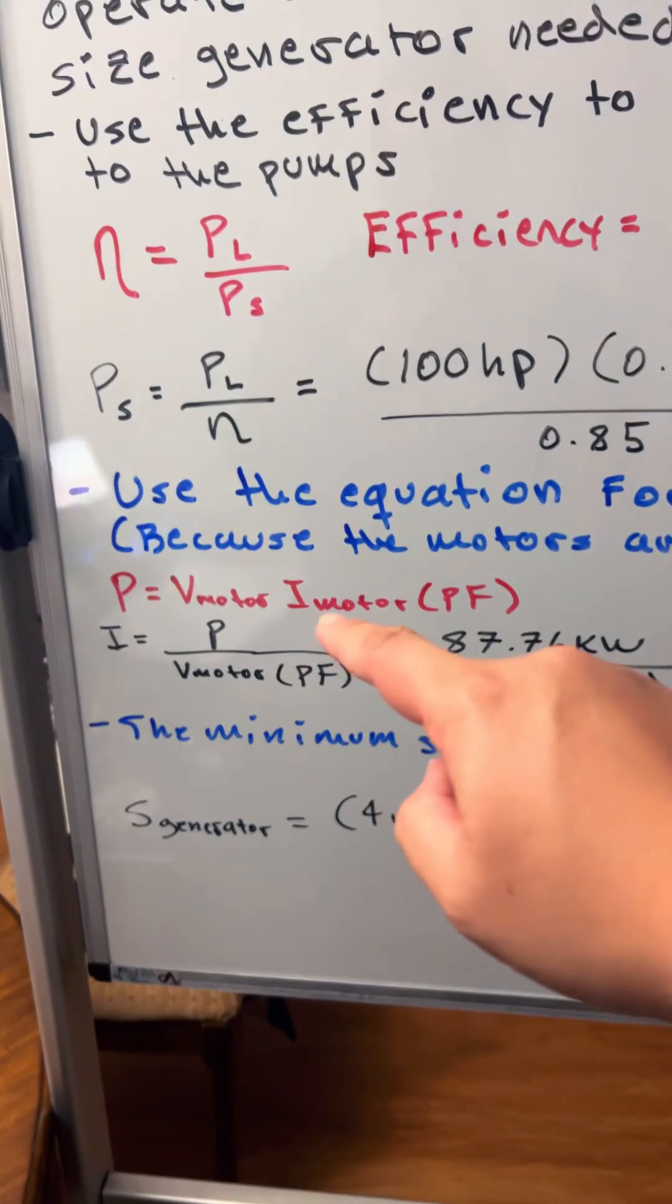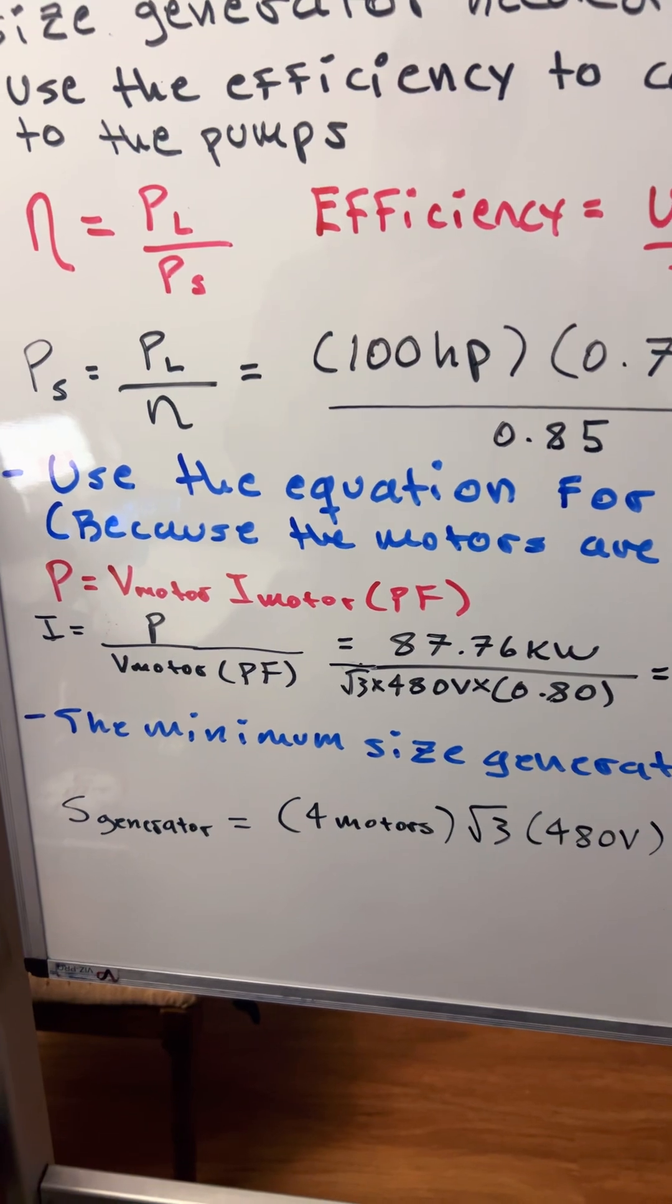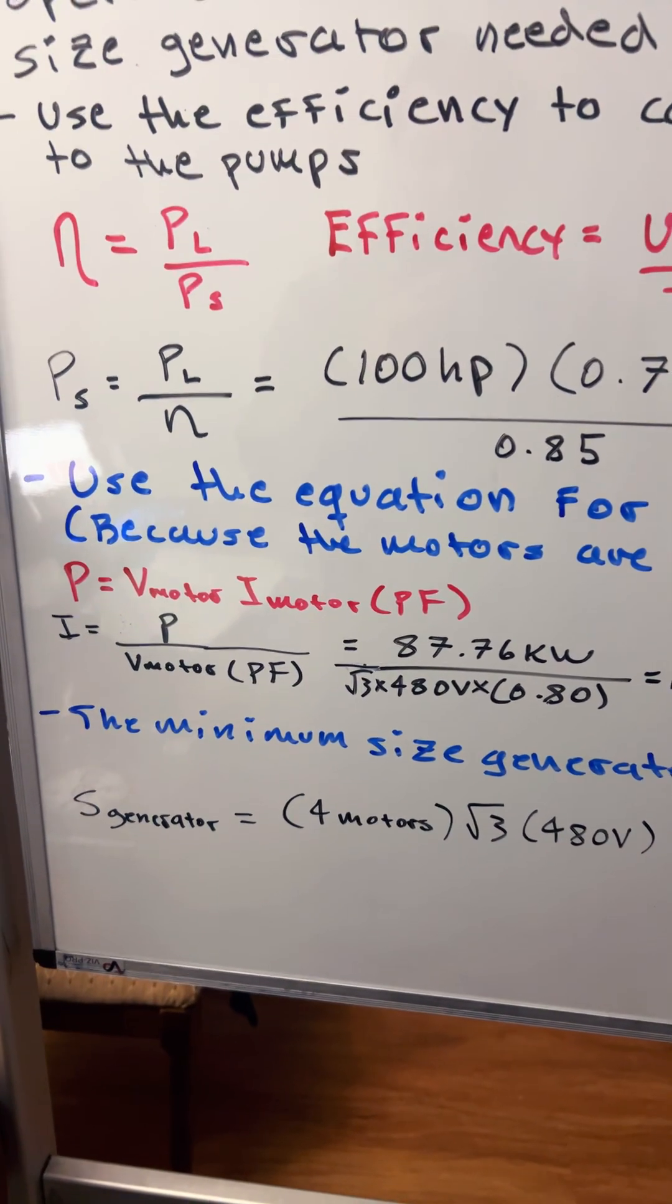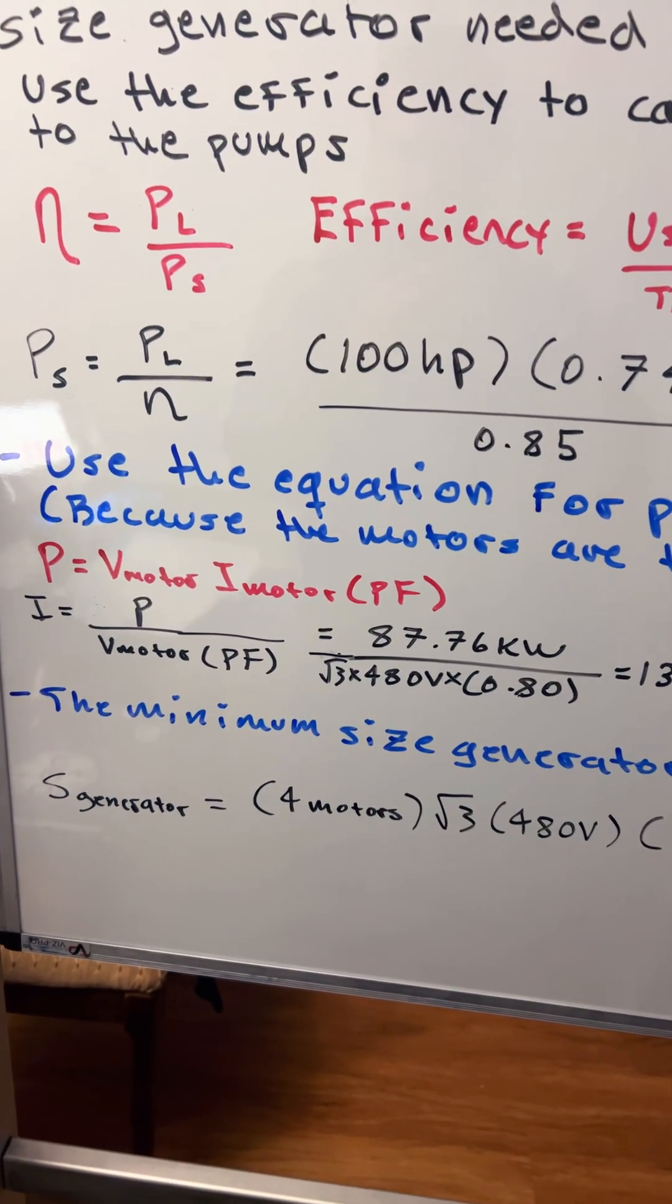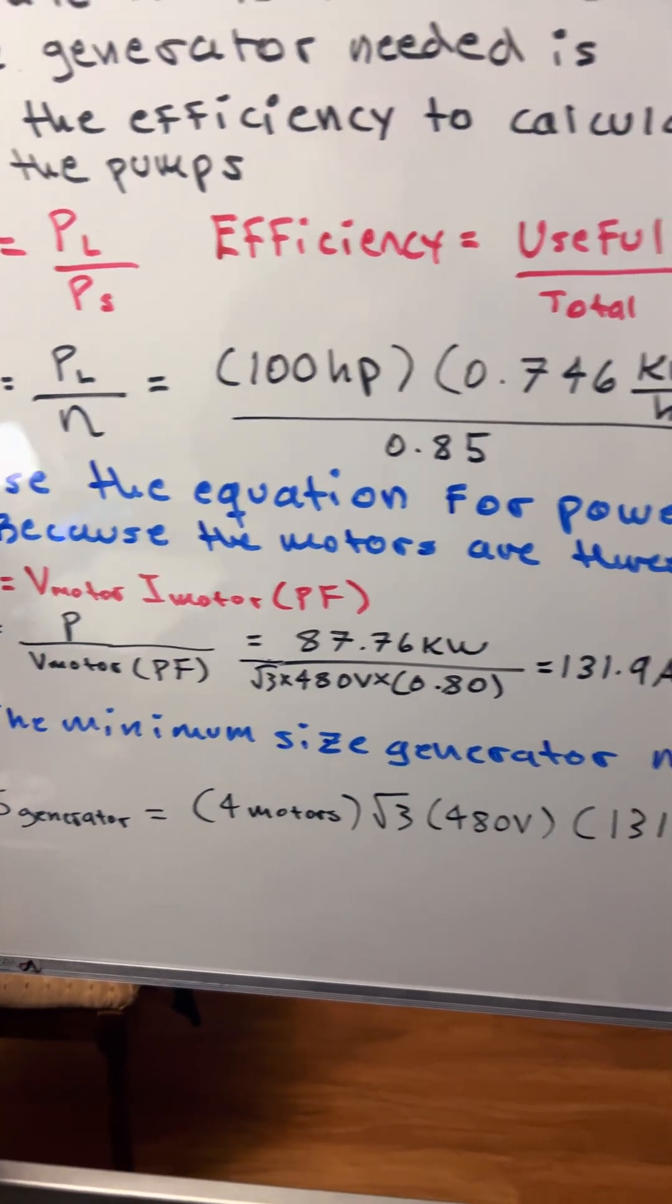Here's the formula: power equals the voltage of the motor times the current of the motor times the power factor. Now we're going to find the current, so I equals P divided by the voltage times the power factor.